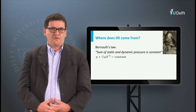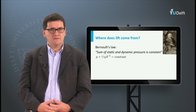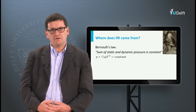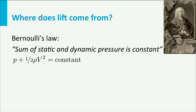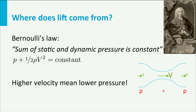We have looked at the formula for lift, but how is the lift force generated? One way of explaining is by using the law of Bernoulli. He postulated his formula as: the sum of static and dynamic pressure is constant — p plus half rho v squared is constant. This means that when the speed increases, the local pressure drops. In a tube with a throat, the pressure in the narrow section is the lowest but the airspeed is the highest. These pressure differences can be created by differences in airspeed and can be used to create lift.